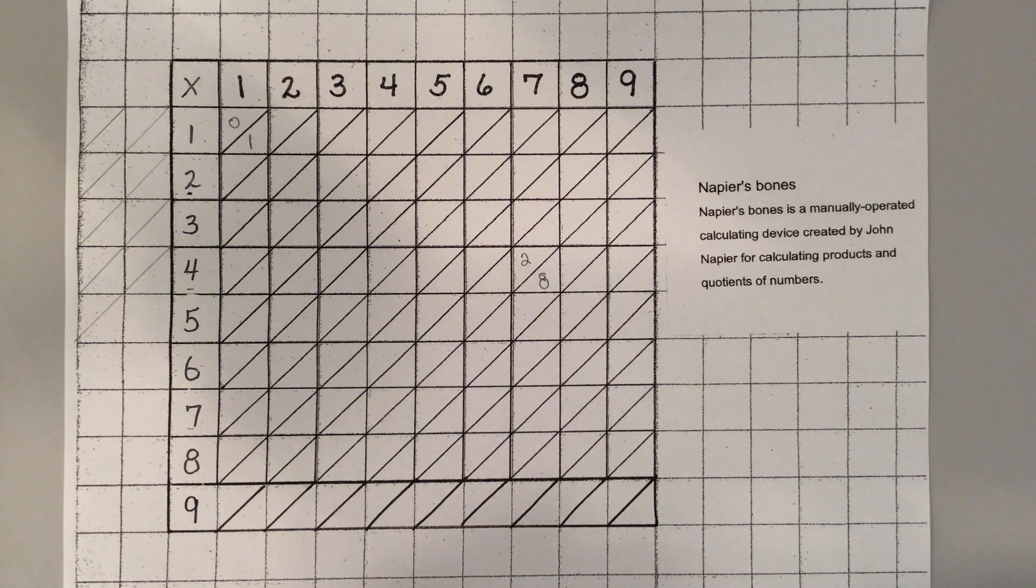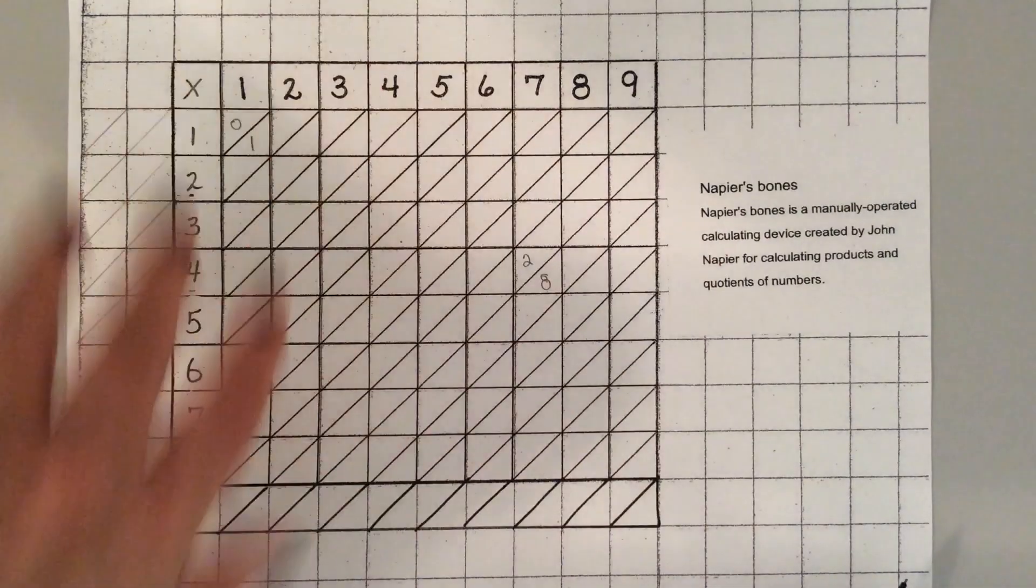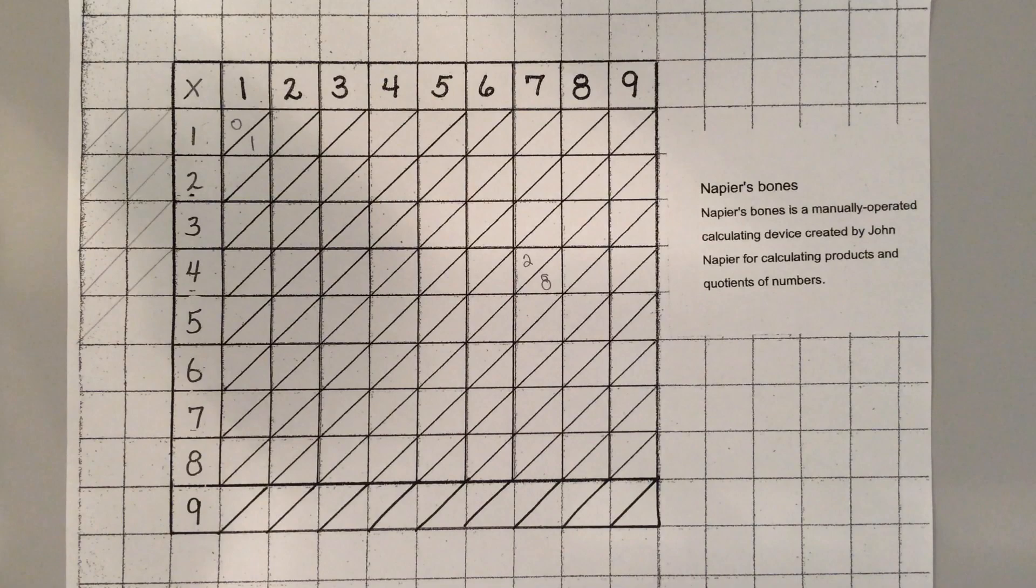John Napier lived in Scotland. He was born in 1550 and died in 1617, so it would be like the late 1500s, early 1600s. He's really famous for doing a lot of things with logarithms, but one of the things he did do was create this calculating device to help people multiply and divide.